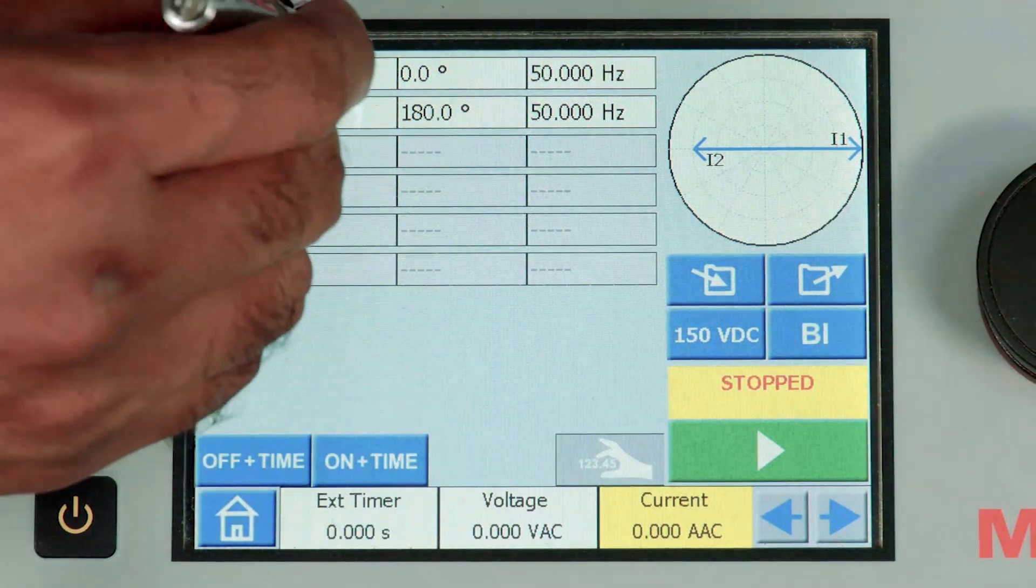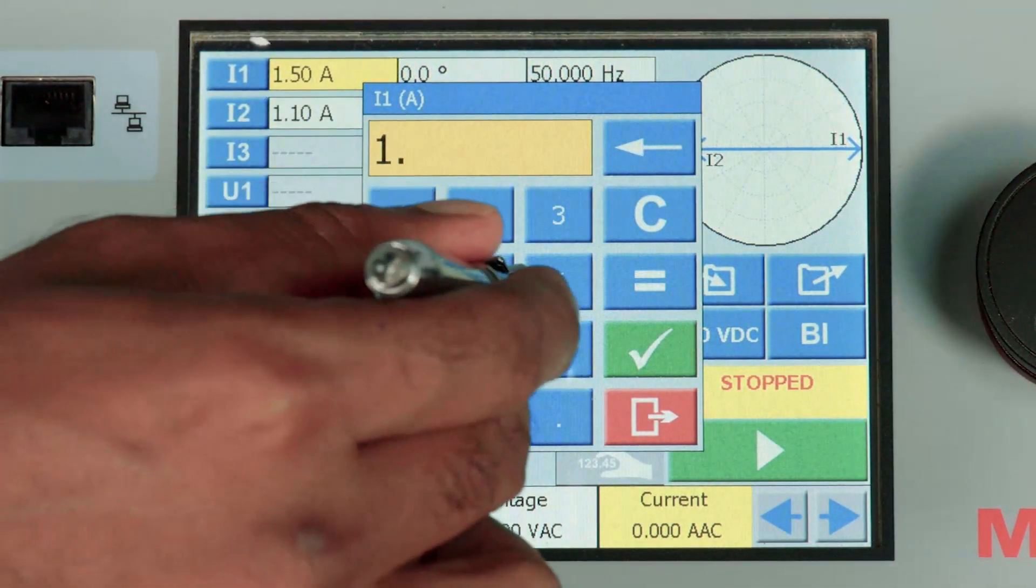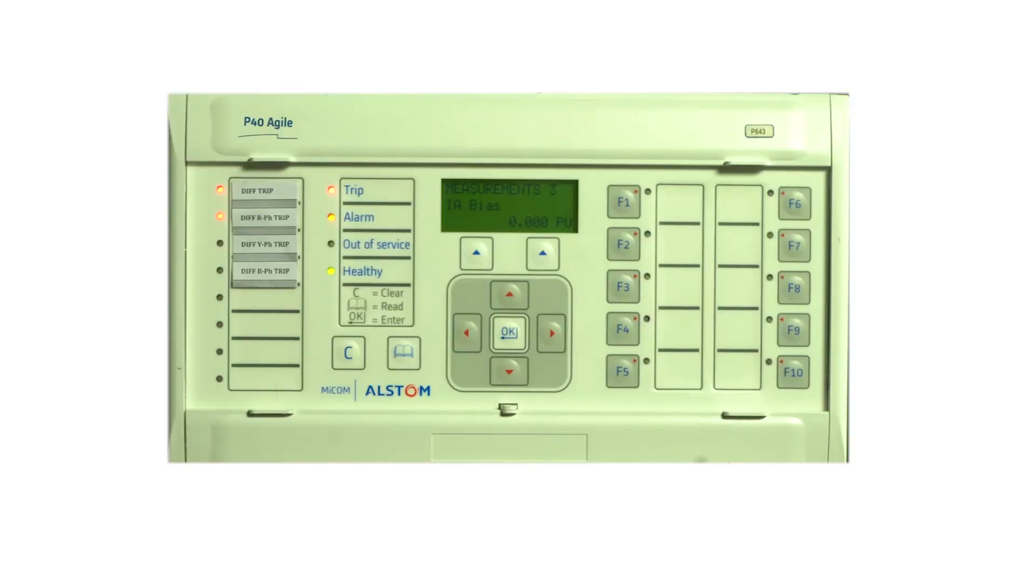Let us repeat the same procedure by injecting 1.3 amps in both the CTs. Let me reset the relay.